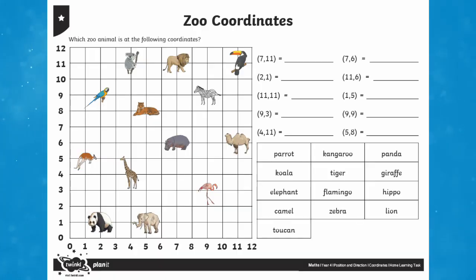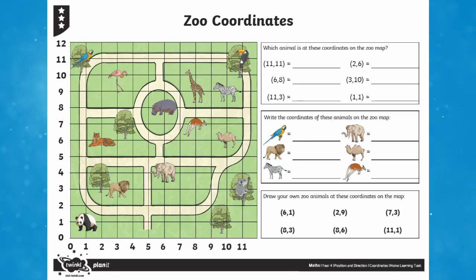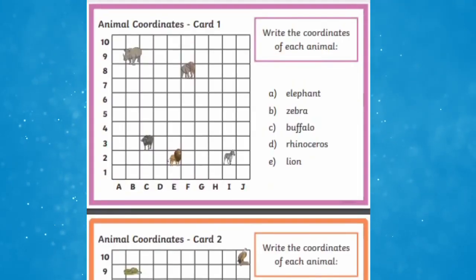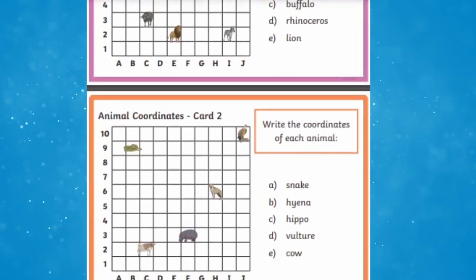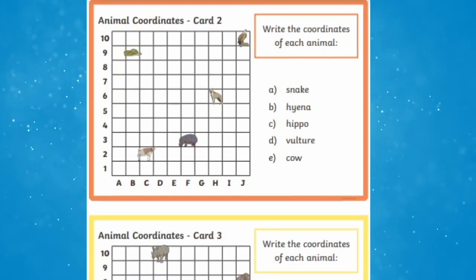Here are some activities you can do with learners to help teach these skills. Themed around animals in a zoo, these illustrated worksheets ask your class to identify the grid coordinates of various animals. The three differentiated worksheets let children practice reading coordinates as well as writing them, with the most difficult version offering the opportunity to write the coordinates themselves. You can also use challenge cards for practice finding points on the graph, where the animals are, and writing down the coordinates.